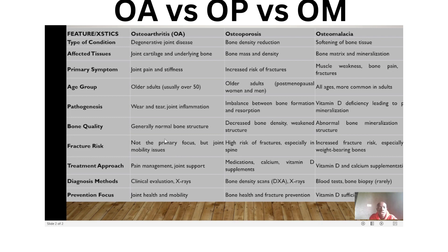For fracture risk: in osteoarthritis, fracture is not the primary focus — the problem is joint mobility issues. In osteoporosis, there is a high risk of fractures, especially in the spine — the pathological fractures. In osteomalacia, there is also increased fracture risk, especially in weight-bearing joints, due to reduced mineralization.